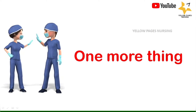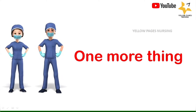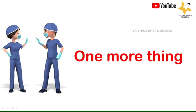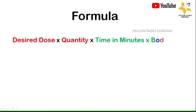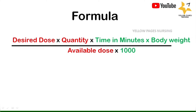A central line is preferred because with a peripheral line there are possibilities of IV complications and the dilution strength will also be low. The formula to calculate the rate is: desired dose × quantity × time in minutes × body weight, divided by available dose × 1000, which gives the rate in ml per hour.